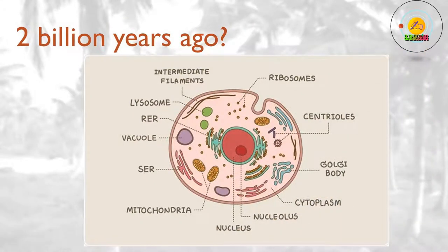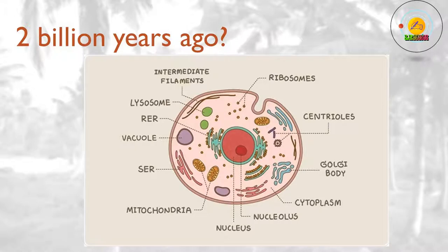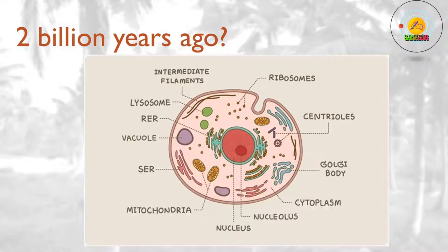2 billion years ago? Eukaryotic cells — cells with internal organs known as organelles — come into being. One key organelle is the nucleus, the control center of the cell, in which the genes are stored in the form of DNA. Eukaryotic cells evolved when one simple cell engulfed another, and the two lived together, more or less amicably — an example of endosymbiosis. The engulfed bacteria eventually become mitochondria, which provide eukaryotic cells with energy.